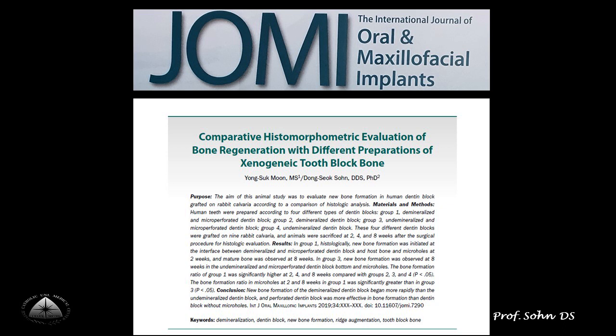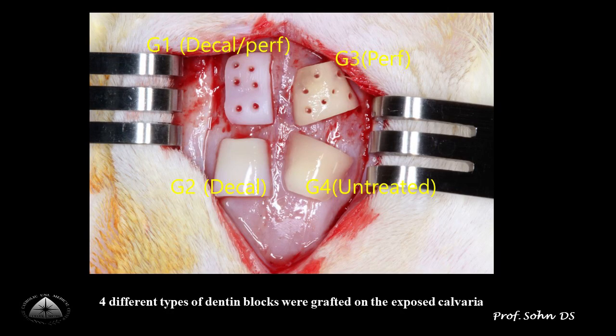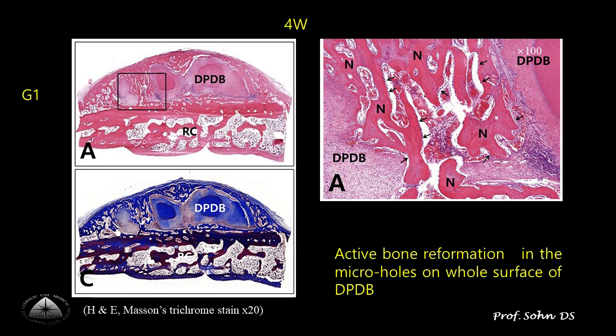This is a comparative histomorphometric evaluation of bone regeneration with different preparations of xenogenic tooth block bone. Four different types of dentine blocks were grafted on the exposed calvaria. Group 1 is decalcified and pulpectomized dentine. Group 2 is decalcified dentine. Group 3 is pulpectomized dentine without decalcification. Group 4 is untreated dentine. This study revealed the highest and fastest bone formation in micro-pulpectomized and demineralized dentine compared to any other groups.